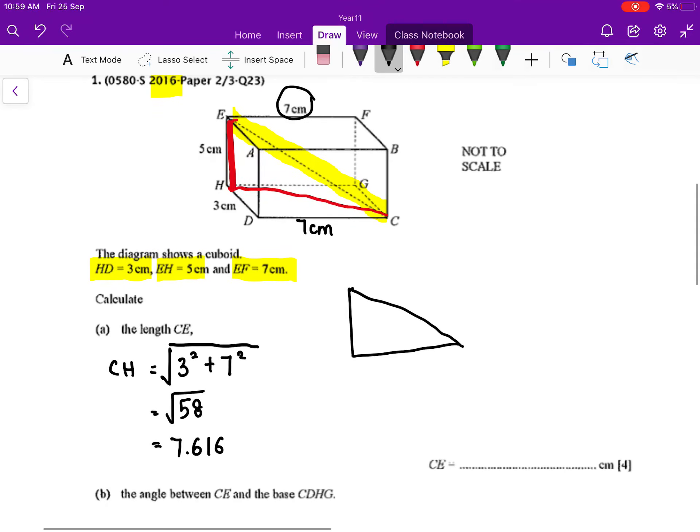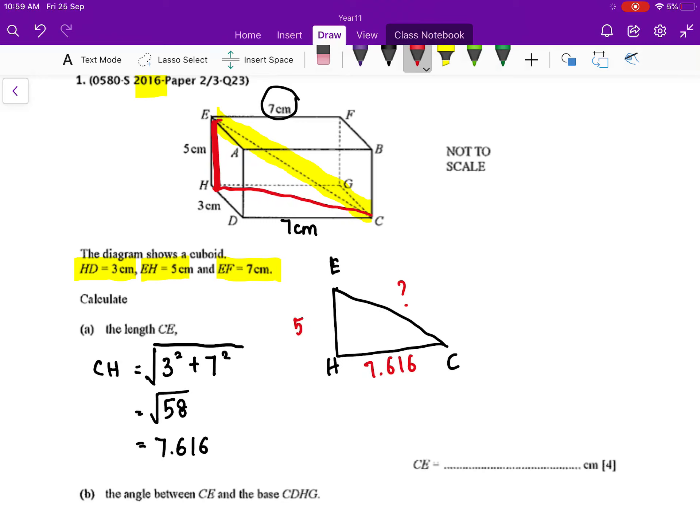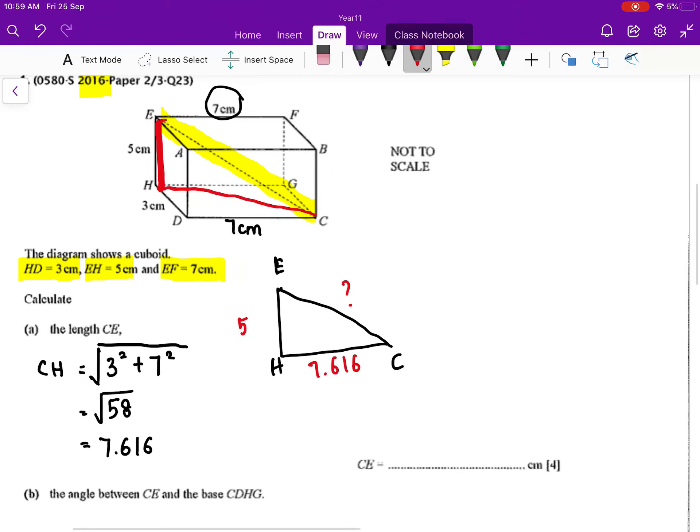The moment you have the length of CH, where this is your E and this is your H, this is your C, so your CH is 7.616 and your length of EH is 5 and we are going to calculate your EC. The question wants you to calculate CE, right? It's the same thing.